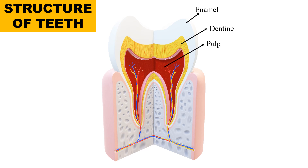The next part is pulp. It is a mass of connective tissue that resides within the center of the tooth, directly beneath the layer of dentine. The next part is gum. These are the soft pinkish tissue in which the tooth is embedded, and they provide the base to the tooth.